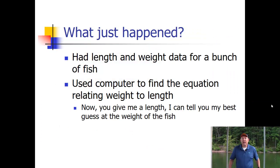So what just happened? We had length and weight data for a bunch of fish, and we used the computer to give us an equation relating the weight to the length of fish for this population. Now if you give me the length, I can give you my best guess at how heavy that fish should be. We'll use this a lot because we can talk about something called condition. A fish at a given length has a typical weight, but they can be skinnier or lighter than that typical weight, or heavier, and that tells you a lot about the environment that fish is living in.